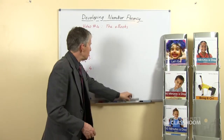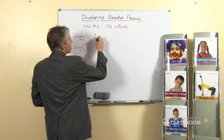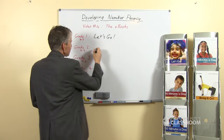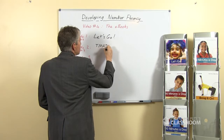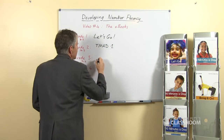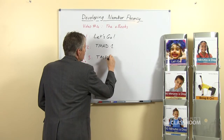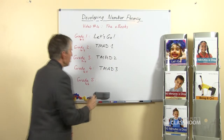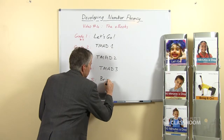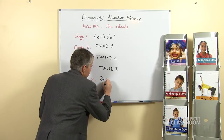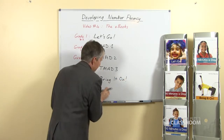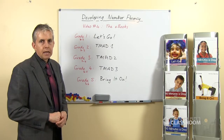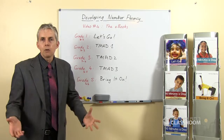Let me quickly go through what the system is and the titles that we've got. At the grade one level we have a set of four eBooks called Let's Go. For grade twos we have 10 Minutes a Day Level One, then 10 Minutes a Day Level Two and Level Three, and for the grade fives the set of books is called Bring It On. Each year level has four eBooks.